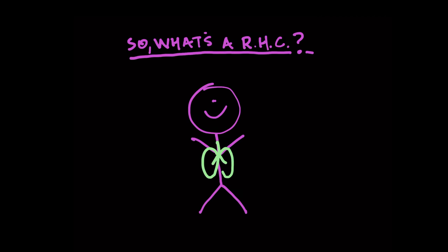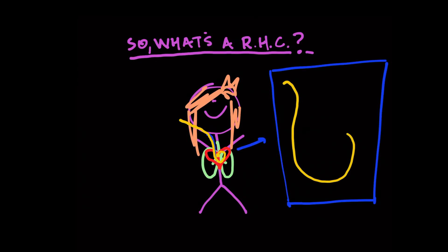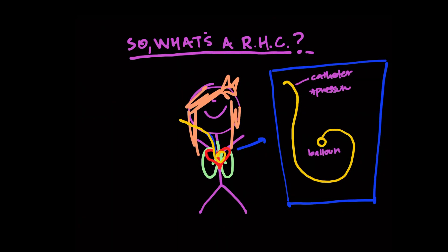So what is a right heart catheter? Here's your little patient — it has lungs, a heart with a right side and a left side, and an internal jugular vein that goes into the right side of the heart via the SVC. When we do a right heart cath, we put this long catheter through the neck, through the internal jugular vein, down through the SVC into the right side of the heart. The actual catheter has a balloon on the end, as well as a pressure sensor and a temperature sensor.